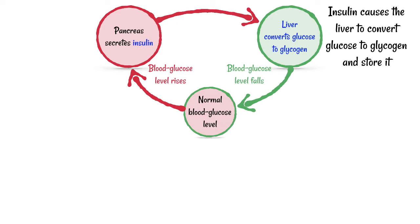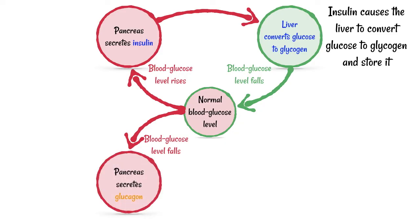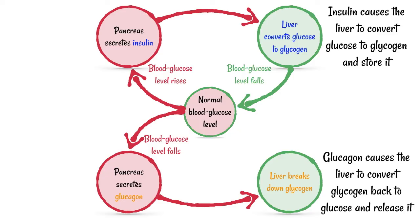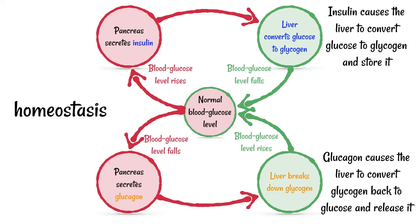As you start doing activities, your body's cells carry out respiration and blood glucose falls below the normal level. Fortunately, the pancreas recognizes this change and secretes another hormone called glucagon. The liver then breaks down the glycogen, converting it back into glucose and releasing it into the blood, causing the blood glucose level to rise back to normal. All of this is an example of homeostasis, where the body keeps its internal environment constant.